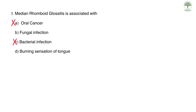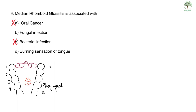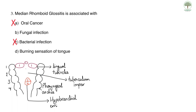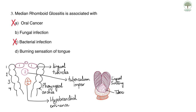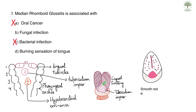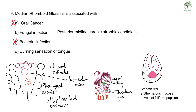Median rhomboid glossitis occurs because the tongue is formed by fusion of two lateral lingual tubercles which meet in the midline and fuse above a central structure, the tuberculum impar, derived from the first and second branchial arches. If this fusion point is defective, it leaves a smooth red erythematous mucosa lacking filiform papillae, extremely prone to atrophic candidiasis. The term posterior midline chronic atrophic candidiasis is also used. The correct answer is B, fungal infection.